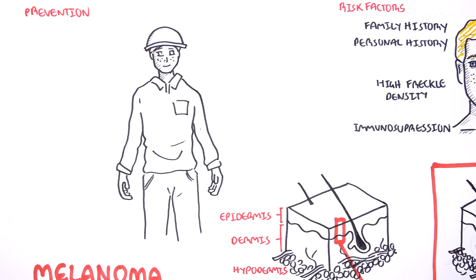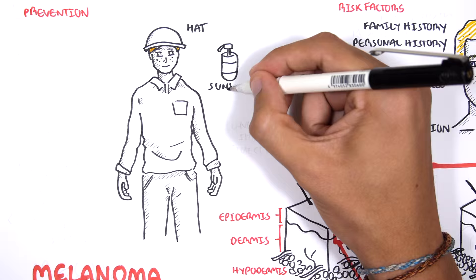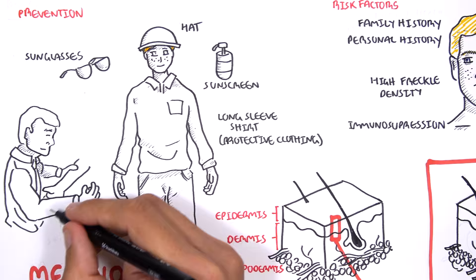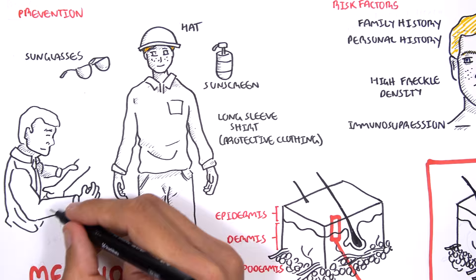There are ways to prevent melanoma. These include wearing a hat, using sunscreen, wearing long-sleeved shirts, protective clothing, especially if you work outside a lot, wearing sunglasses, and also if you have a family or personal history of melanoma, having regular doctor skin checks or even self skin checks.